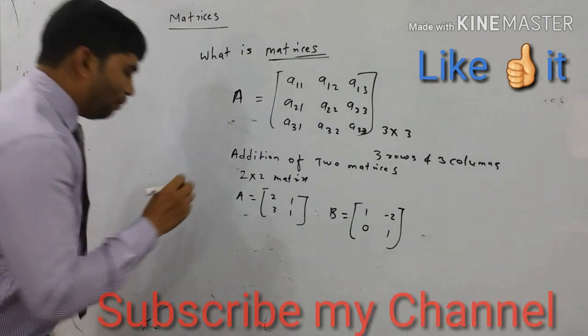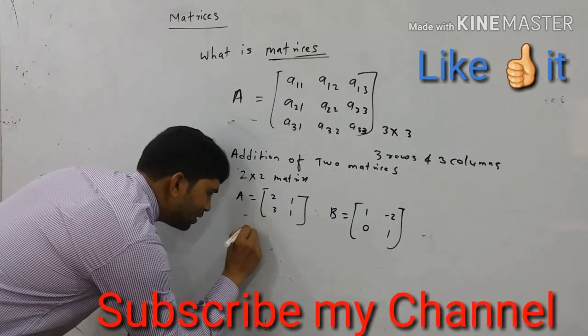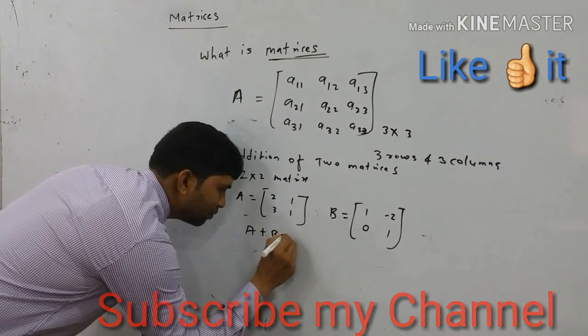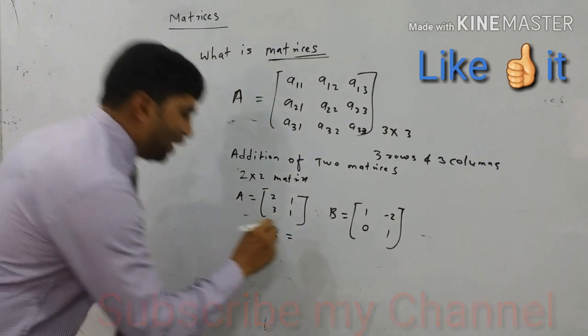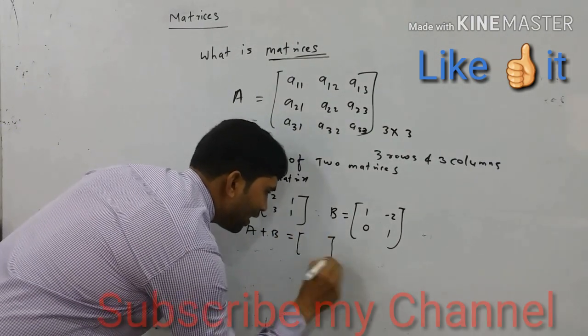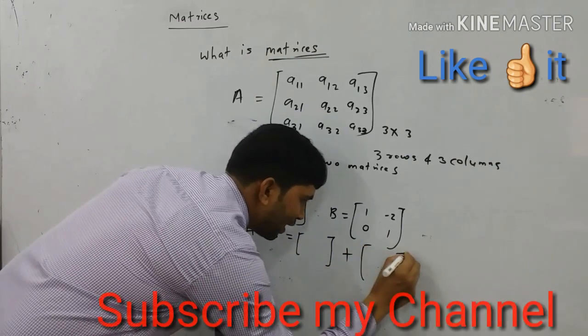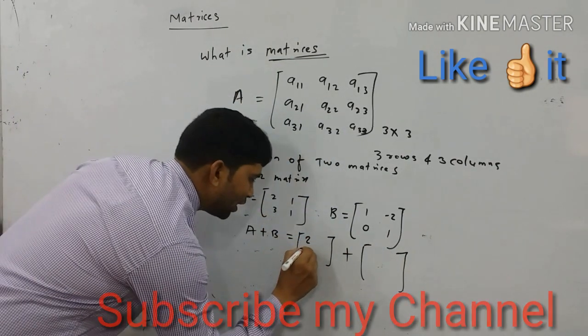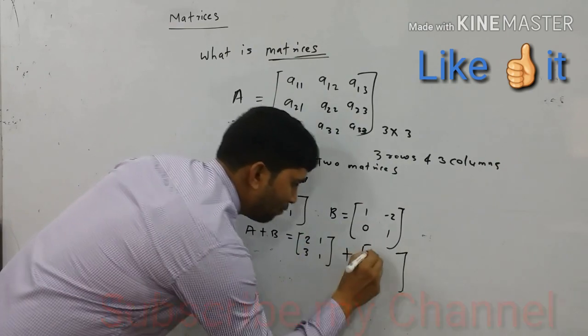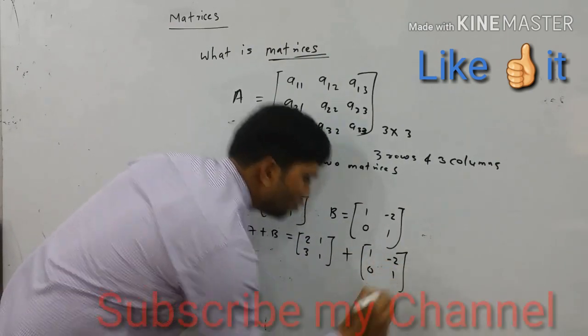Now we perform addition of 2 matrices, A plus B. So we take first matrix A here plus here second matrix here. 2, 3, 1, 1 and 1, 0 minus 2, 1.